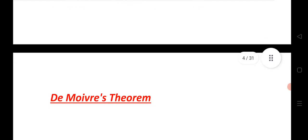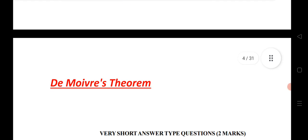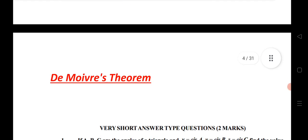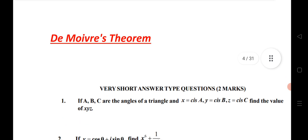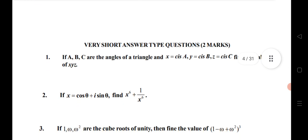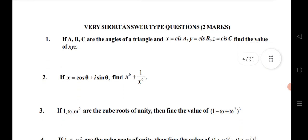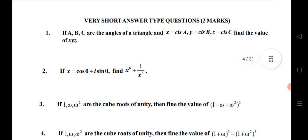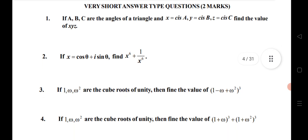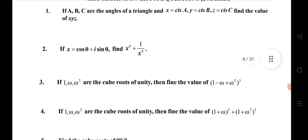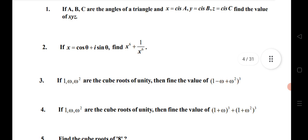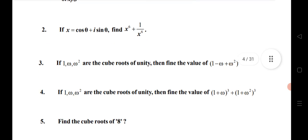Next, let us see De Moivre's Theorem — a very important chapter. We will see the VSAQs first. If A, B, C are the angles of a triangle; next, x equals cos θ + i sin θ; find x⁶ + 1/x⁶.